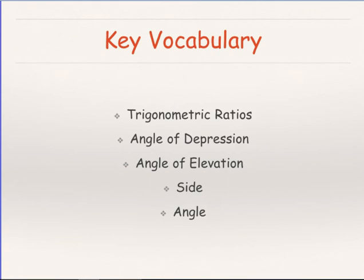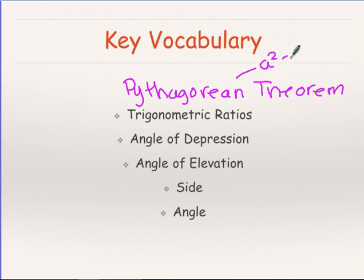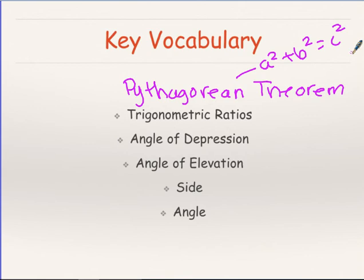What you're going to learn is how to find the missing sides and missing angles of a right triangle. All of these vocab words you know already. One I want to add is the Pythagorean theorem: a squared plus b squared equals c squared. You use this when you know two sides of a right triangle and need to find the third side. Make sure c is the hypotenuse and a and b are the two legs.